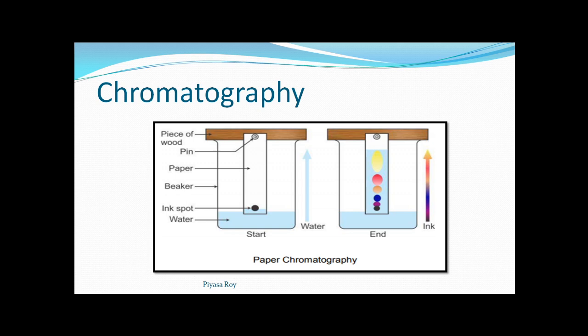In chromatography, there are two phases: one is stationary phase and the other is mobile phase. In paper chromatography, we will be taking a paper — a filter paper — and we will be taking the mixture, that is an ink spot. We will be dipping this paper in water, which will act as the mobile phase.